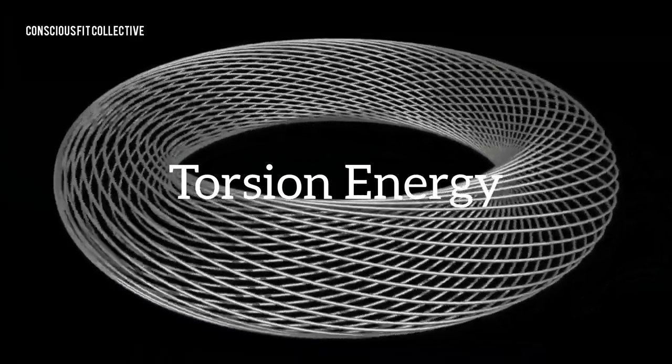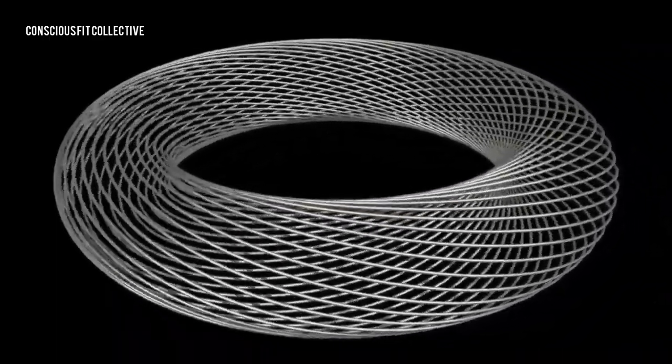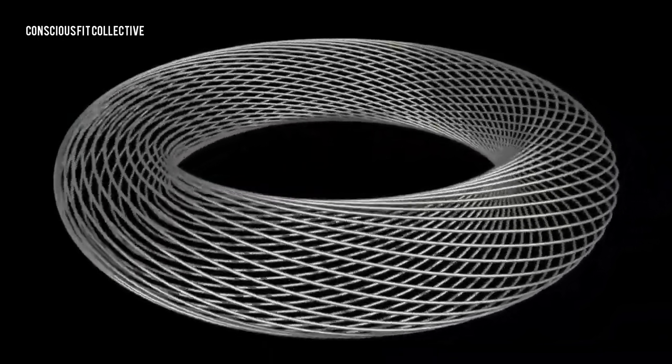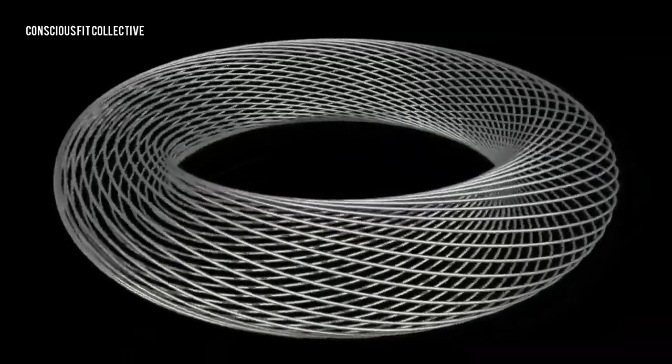Torsion energy. In mathematics, a torus is a surface of revolution with a hole in the middle forming a solid body. Black hole to white hole vortex, the flow is bi-directional.